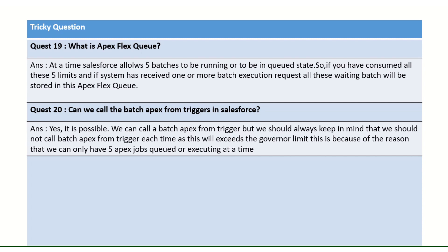Can we call Batch Apex from a trigger? Yes, we can, but we must be careful. The governor limit of five parallel batches still applies, and there is a risk of hitting that limit. You need to ensure you account for all existing conditions and handle everything carefully before invoking a batch from a trigger.